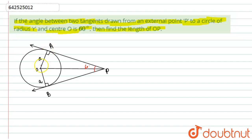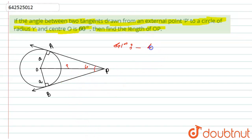The radius of the circle is considered as 'a'. Now let's start with the solution. What is asked here is to find the length of OP. Given that angle APB is equal to 60 degrees — let this be equation number one.